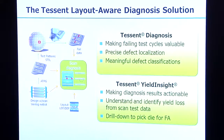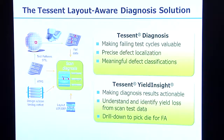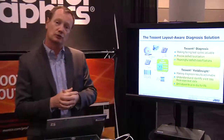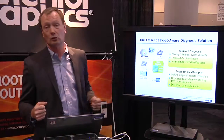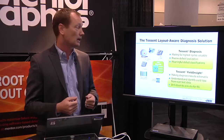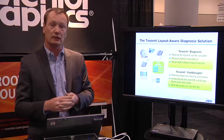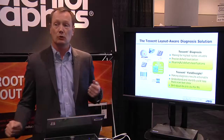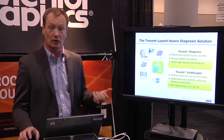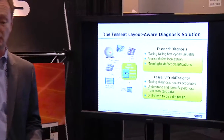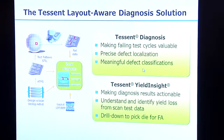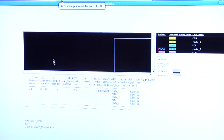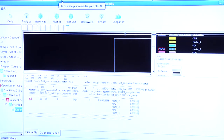The tool that performs this diagnosis is called Tessent Diagnosis. It takes the failed data for a failing device and translates that into a defect type and a location. Tessent Diagnosis can be run interactively or in batch mode. Here we're looking at a report from Tessent Diagnosis run in batch mode.